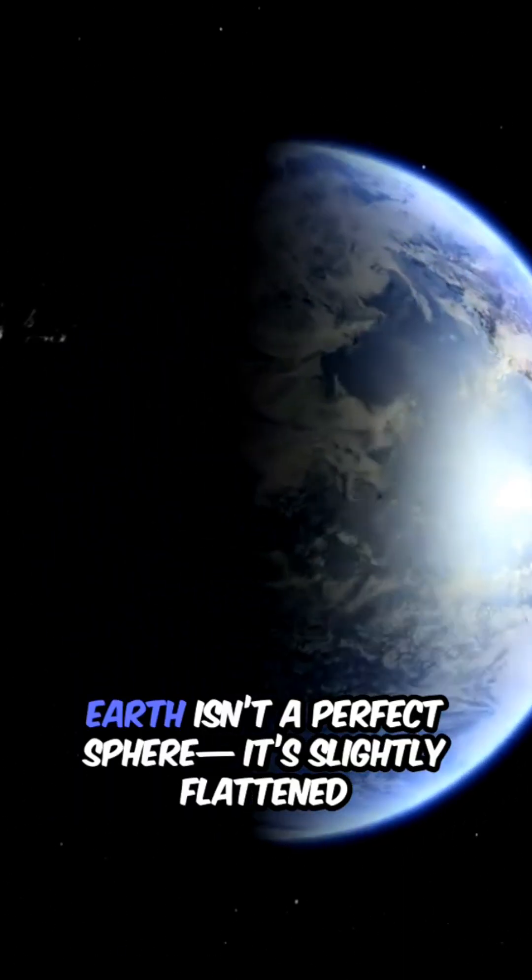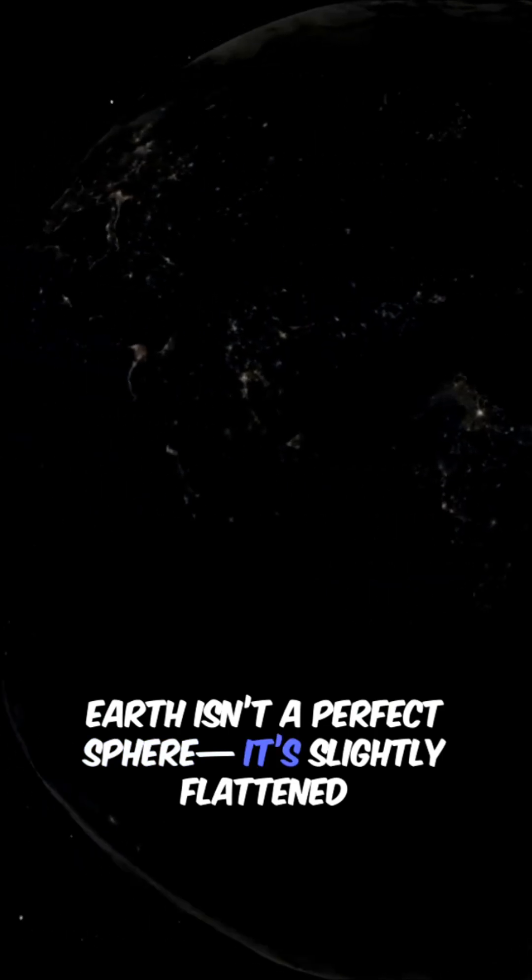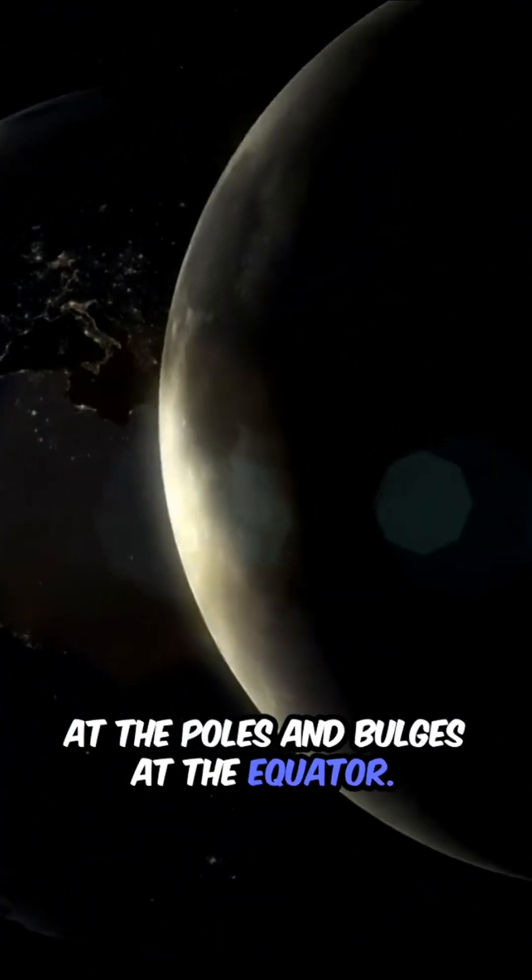Fact number one. Earth isn't a perfect sphere. It's slightly flattened at the poles and bulges at the equator.